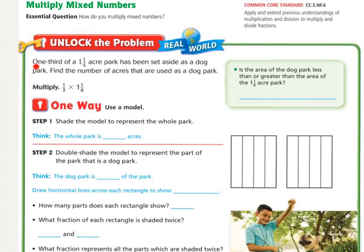Unlock the problem. One-third of a one-and-a-quarter acre park has been set aside as a dog park. Find the number of acres that are used as a dog park. Underline what you're being asked to find, circle the important numbers, and also answer this green box.